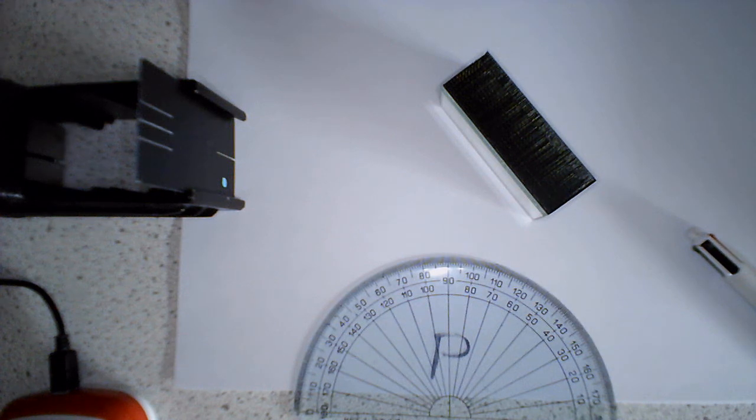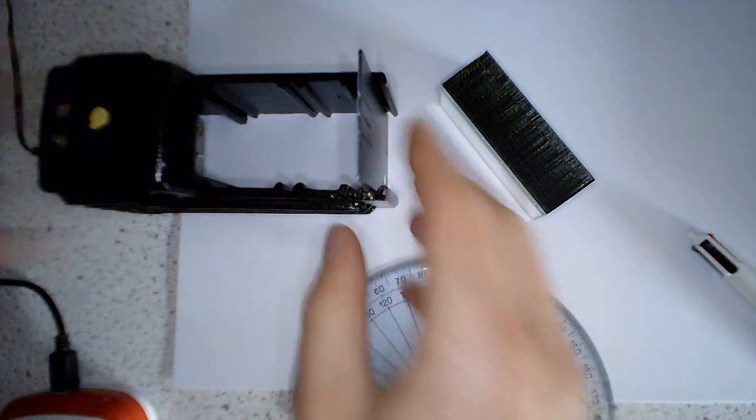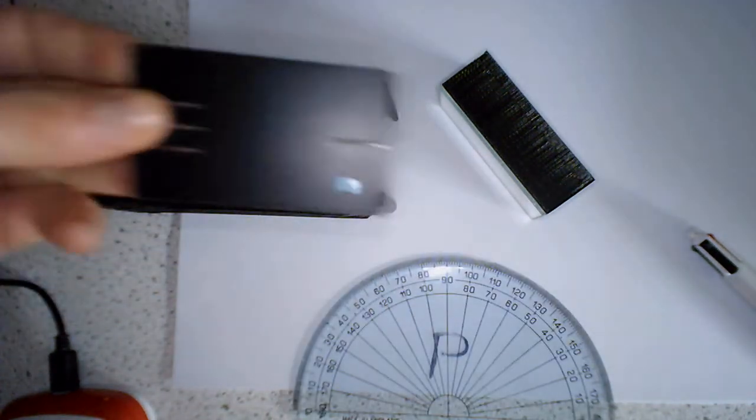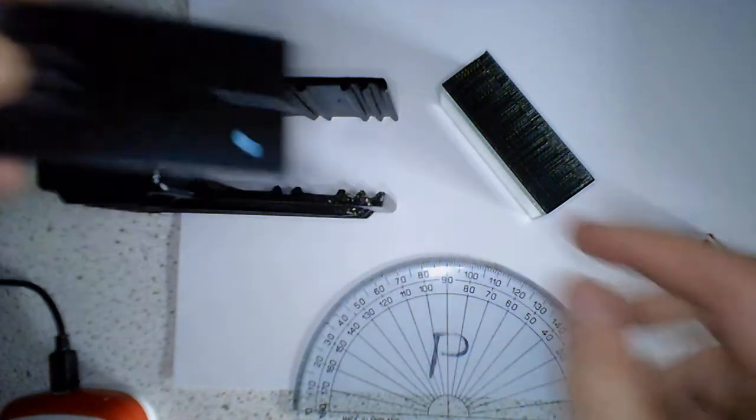Okay, so in this video we're going to take a look at the reflection of light. So what we've got in here is we've got ourselves a ray box with a slit in it, so we're going to get just a fine beam of light.